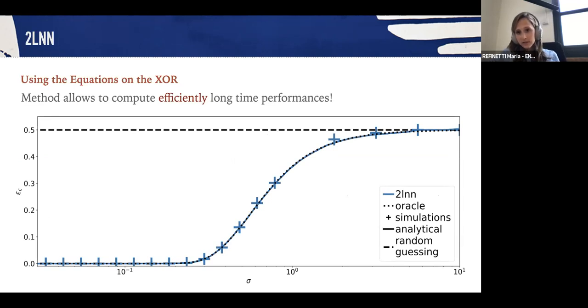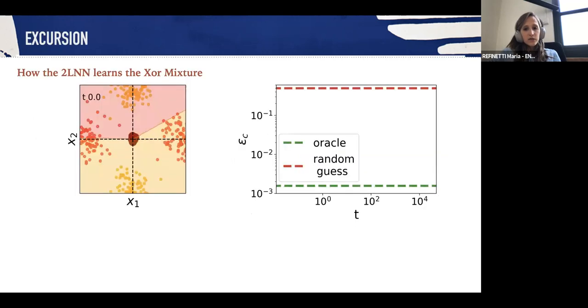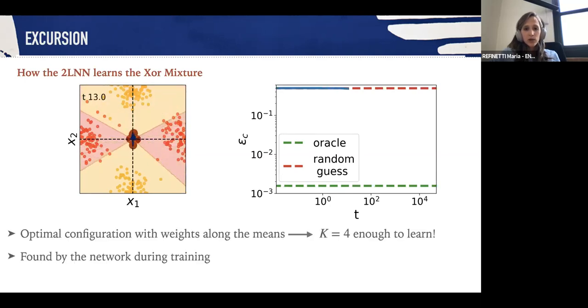Comparing these methods with simulation, we can see that indeed it works pretty well. We can also go a bit further and see how the two-layer neural network actually learns the mixture. What we see is that the network is able to recover the optimal configuration in time and that only four nodes are sufficient to learn this task and achieve close to optimal performance.